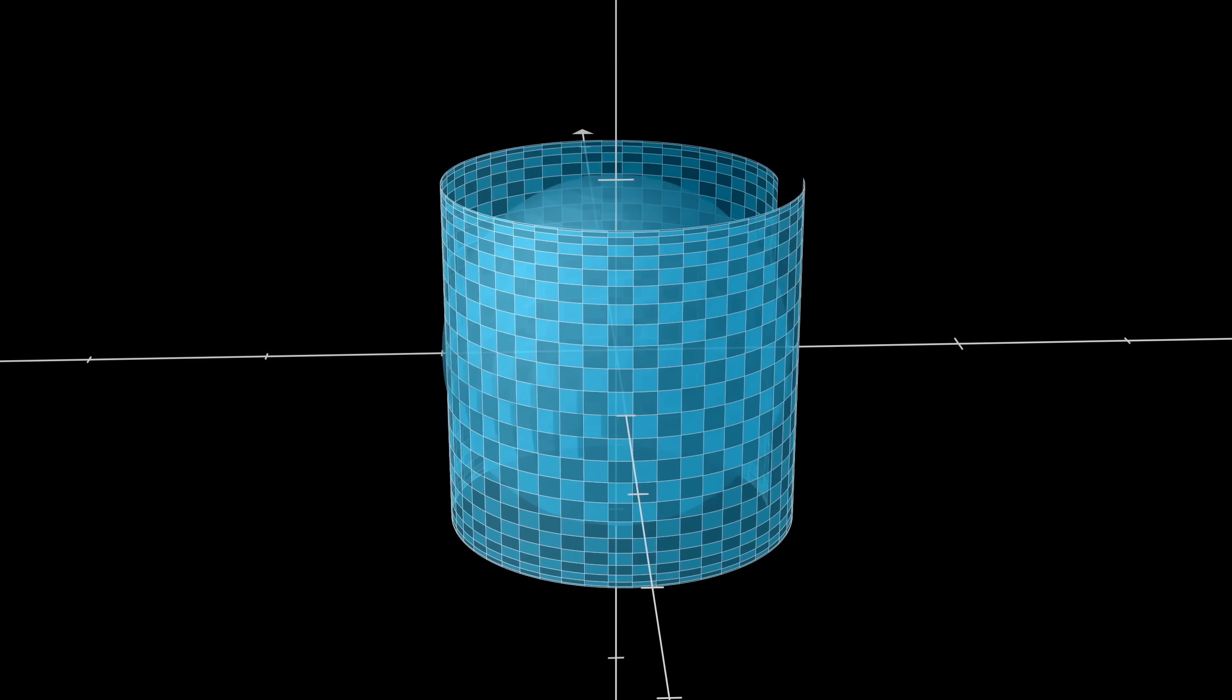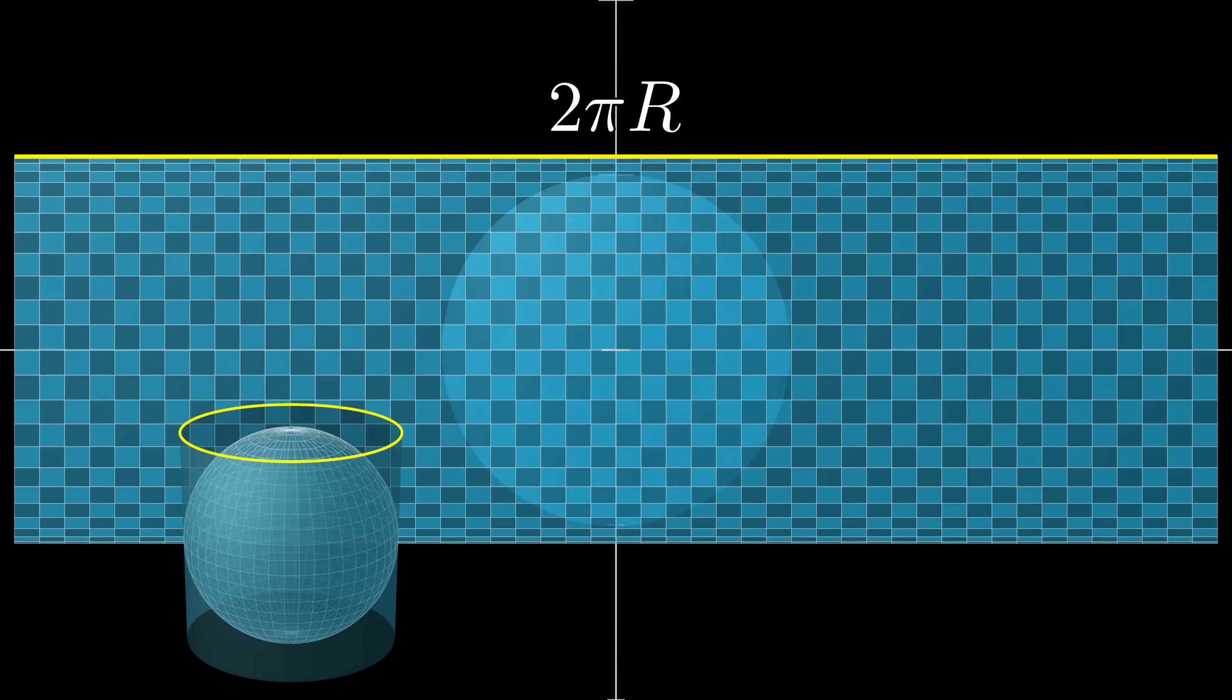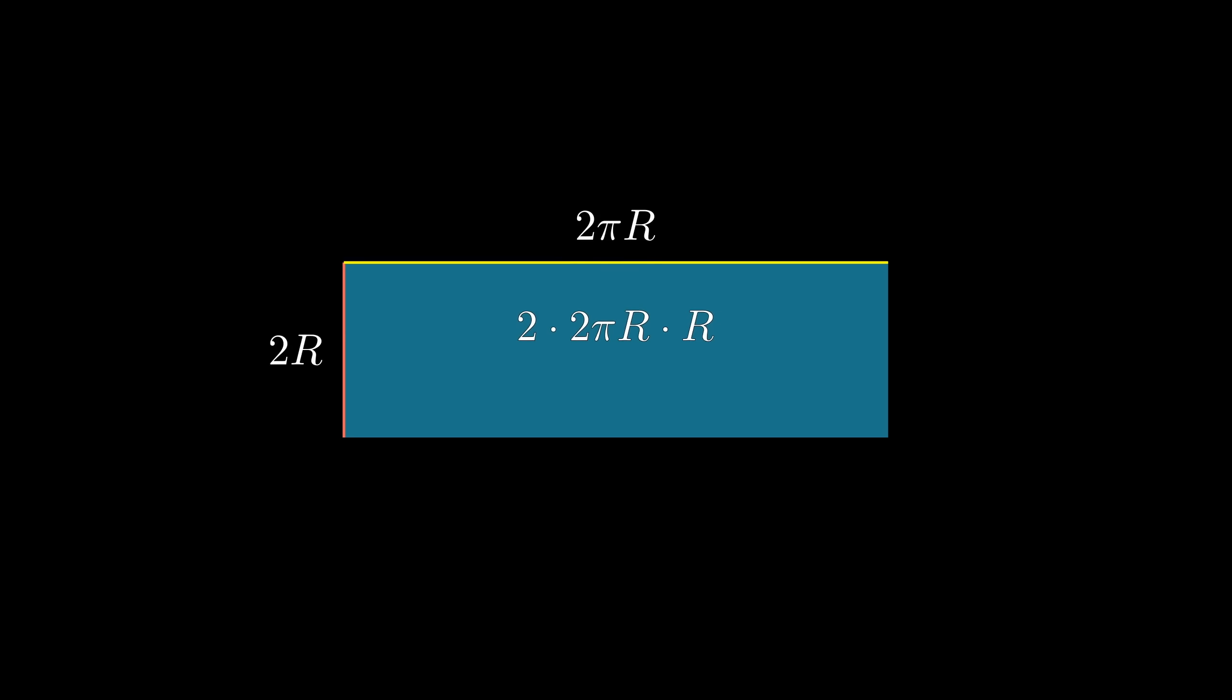The width of this rectangle comes from the cylinder's circumference, so it's 2π times r. And the height comes from the height of the sphere, which is 2 times the radius. And this already gives us the formula, 4πr² when we multiply the two.